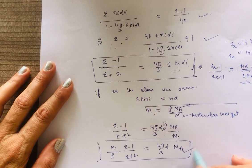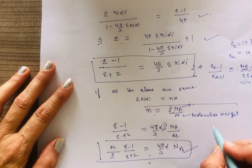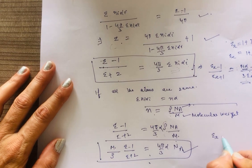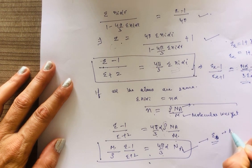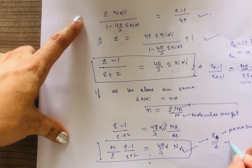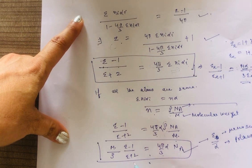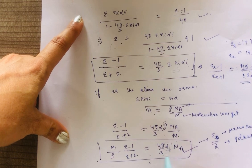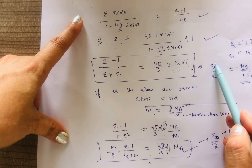This relation connects the macroscopic quantity epsilon (or epsilon_r) with the microscopic quantity alpha, which is electrical polarizability. If we know the value of epsilon, we can find alpha. If we know alpha, we can find epsilon. And if the relation is in terms of epsilon_r, we can find the relative permittivity directly. Thank you very much.